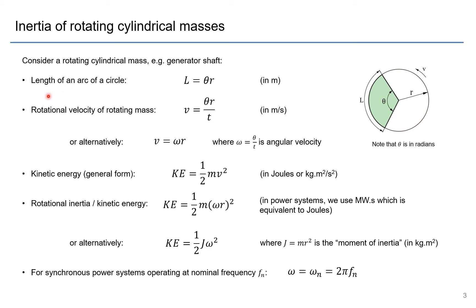So we start here with the length of an arc of a circle rather, and it's related to the angle theta and the radius of that circle. And if this circle was rotating, then we would have some velocity θr divided by time t, and we can convert that into some kind of angular velocity. So the velocity is equal to omega times the radius.